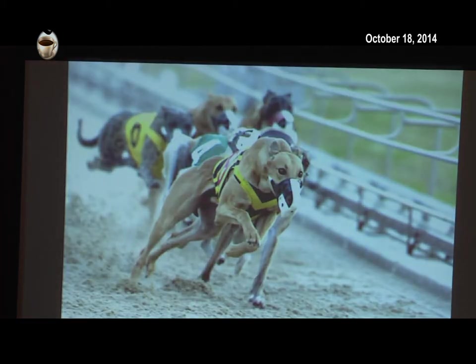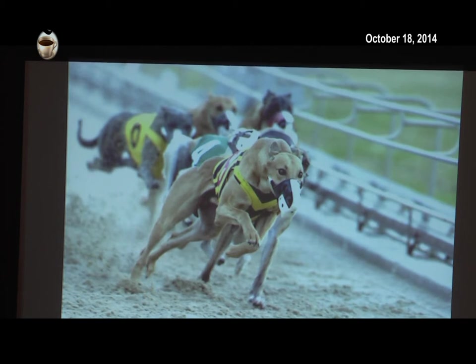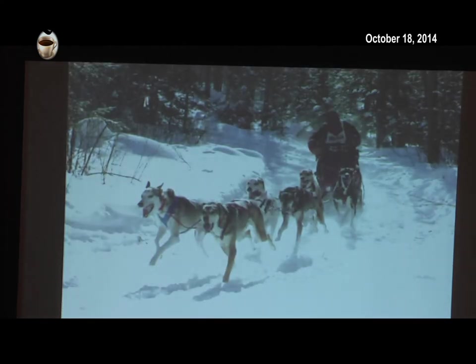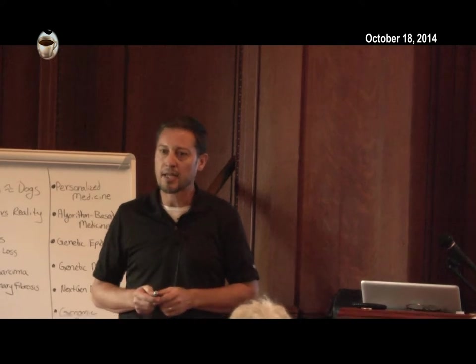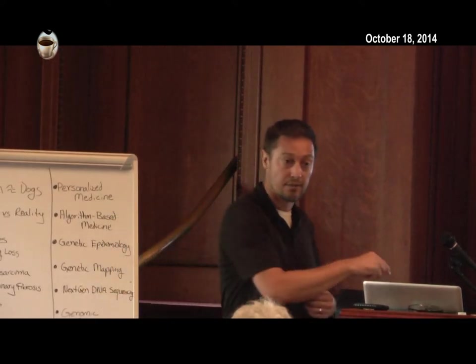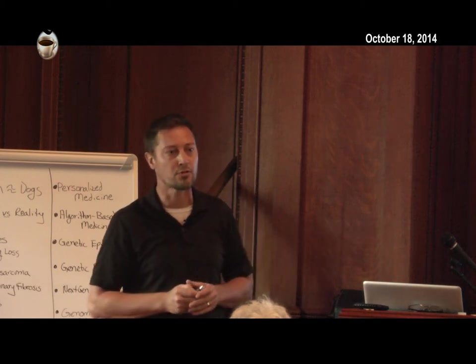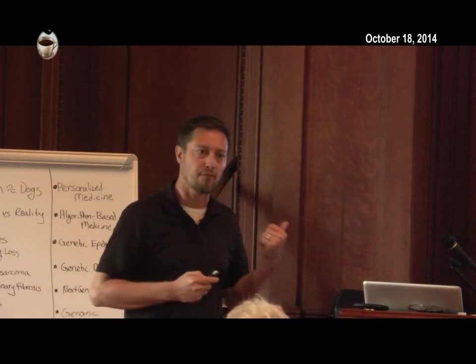Through selective breeding, we haven't just changed the size and shape of dogs. We've also altered their athleticism and physiology. We've bred dogs that excel for speed, like racing greyhounds, and dogs that excel for endurance, like Iditarod sled dogs. To give you a sense of how extremely different these dogs are: they eat the equivalent of 70 Big Macs every day, run over 100 miles in sub-degree temperatures, and do that 10 or 11 days straight. Their physiology is not just a consequence of training — they're genetically bred to perform that kind of behavior.